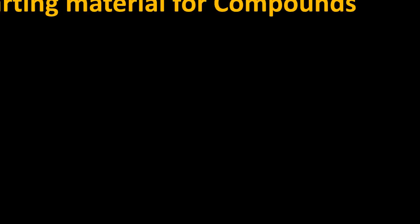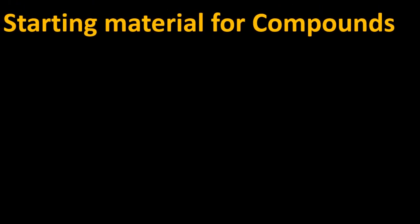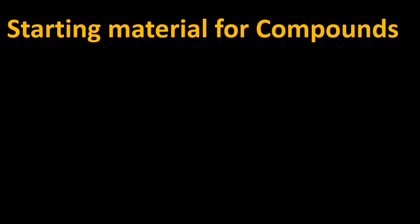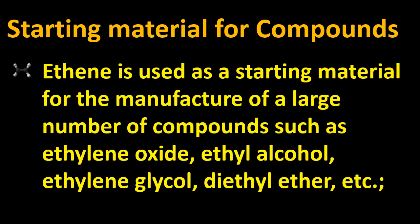Ethene is used as a starting material for the manufacturing of a large number of compounds such as ethylene oxide, ethyl alcohol, ethylene glycol, diethyl ether, and many more.